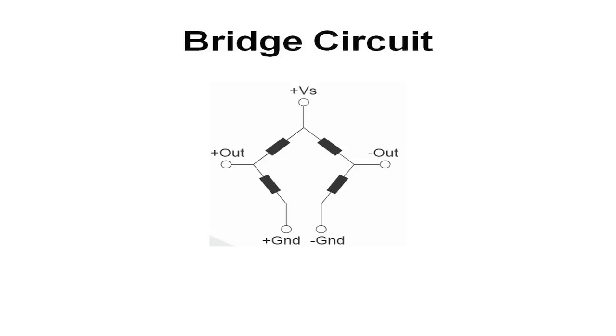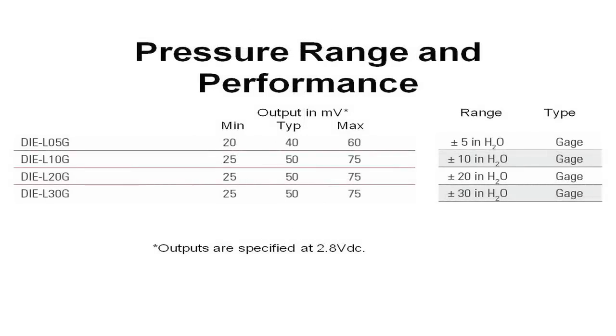Can you give us some specifics on the available products and performance? We currently offer four pressure ranges from 5-inch of water full-scale to 30-inch of water full-scale. The typical full-scale output of the devices is 50 millivolts, where the 5-inch of water is typically 40 millivolts. These outputs are specified at a supply voltage of 2.8 volts.